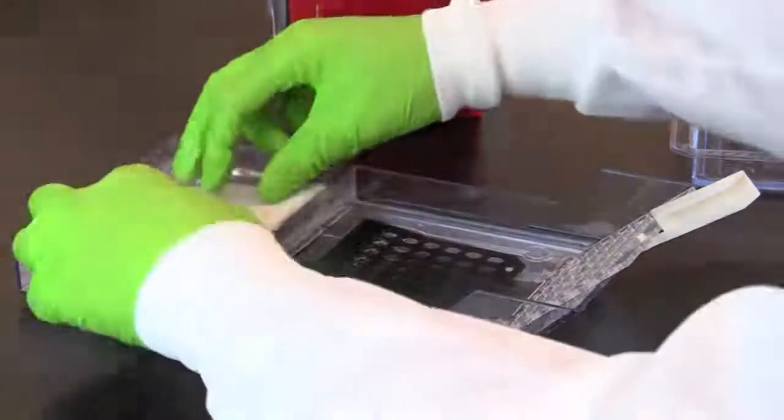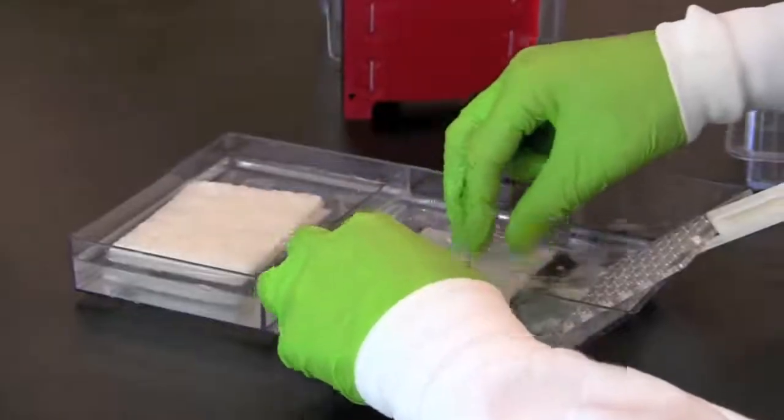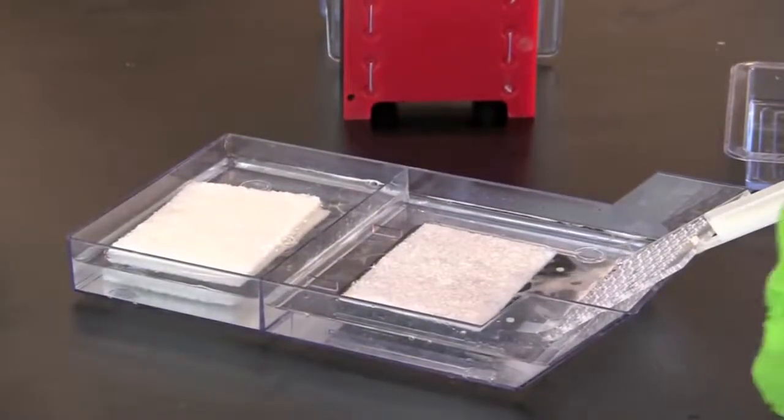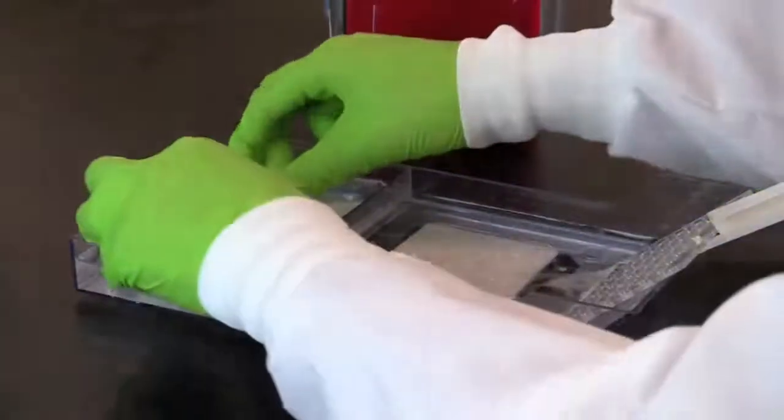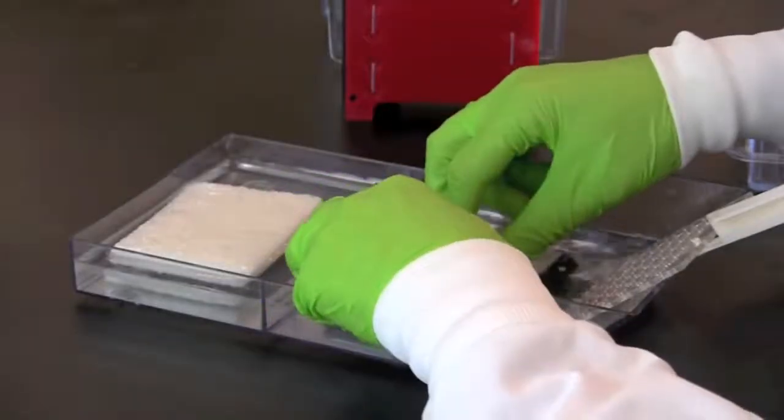Lay one fiber pad flat on the black plastic. Next wet a piece of blotting paper and place it on top of the pad. Be careful to avoid any bubbles between the pad and the paper and make certain the buffer covers the paper.